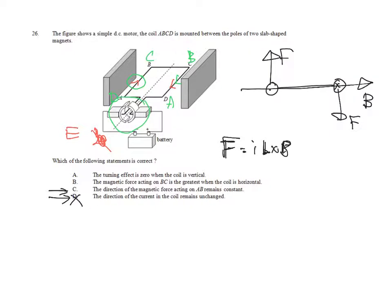Let's check option C. The direction of the magnetic force acting on AB remains constant. With the same reasoning, after one half cycle, you will find that the force becomes pointing downward. However, initially it is pointing upward. Therefore, the direction of the force exerting on AB has been altered. Therefore, DC must not be the answer.